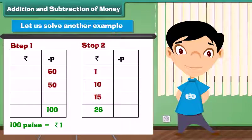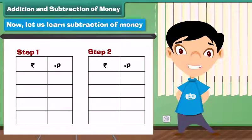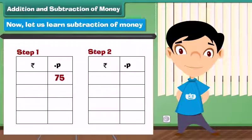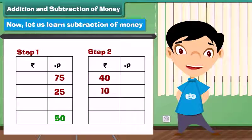Now let us learn subtraction of money. Subtract 10 rupees 50 paise from 40 rupees 75 paise. Step 1: Subtract the numbers in the paise column — 75 minus 25 is equal to 50 paise. Write 50 under the paise column. Step 2: Subtract the numbers in the rupees column — 40 minus 10 equals 30. Write 30 under the rupees column.